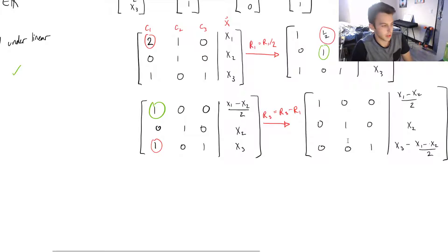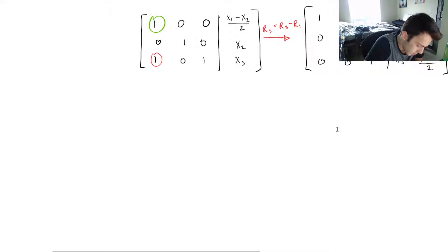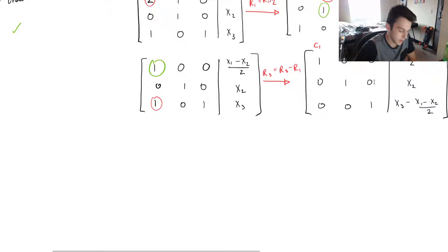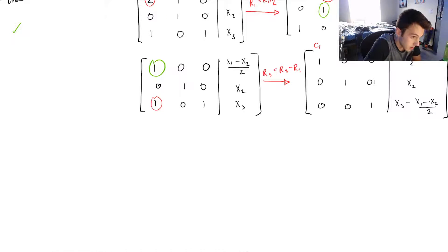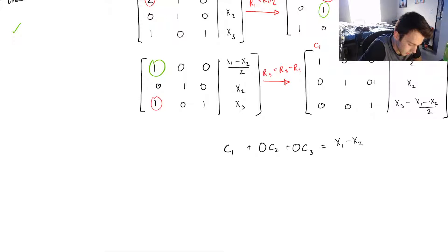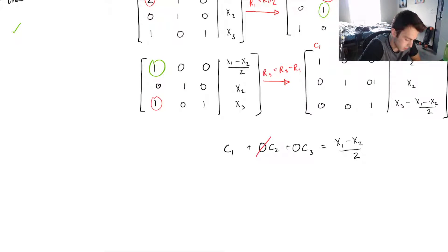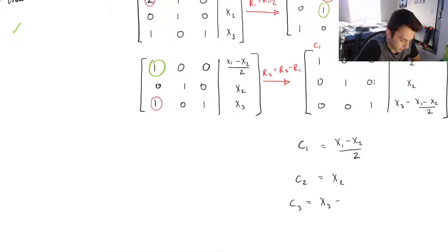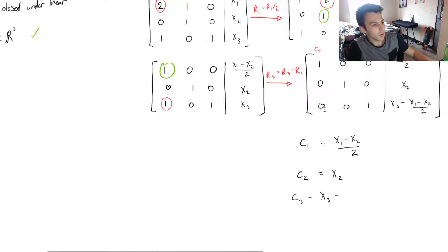How do we interpret the results of this matrix? These rows represent C1, C2, and C3 — the coefficients — and the right-hand side gives their values in terms of x. So we get: C1 equals (x1 - x2)/2, C2 equals x2, and C3 equals x3 - (x1 - x2)/2.